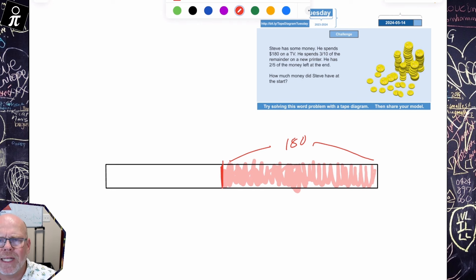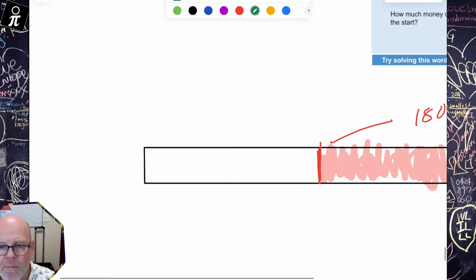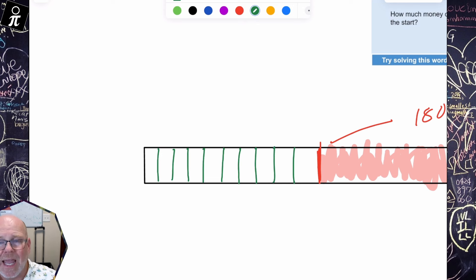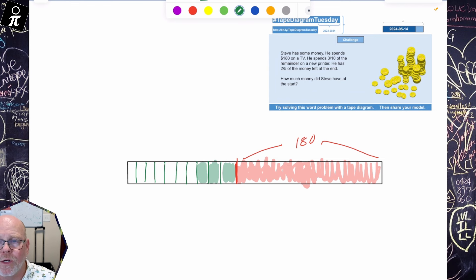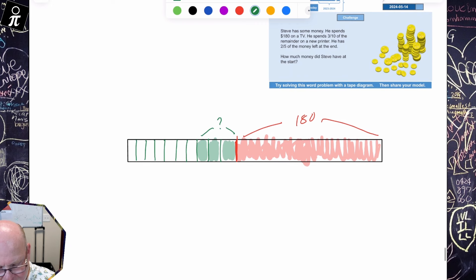And he spends another three tenths of the remainder on a new printer. So let's call that 180 on the TV. And then it says he spent three tenths of the remainder on a new printer. So that means this remainder right here, I need to cut into 10 equal sized pieces. And three tenths of that is going to be spent on printer. So it doesn't tell us how much that is. It just says three tenths. Then it says he has two fifths of the money left at the end.